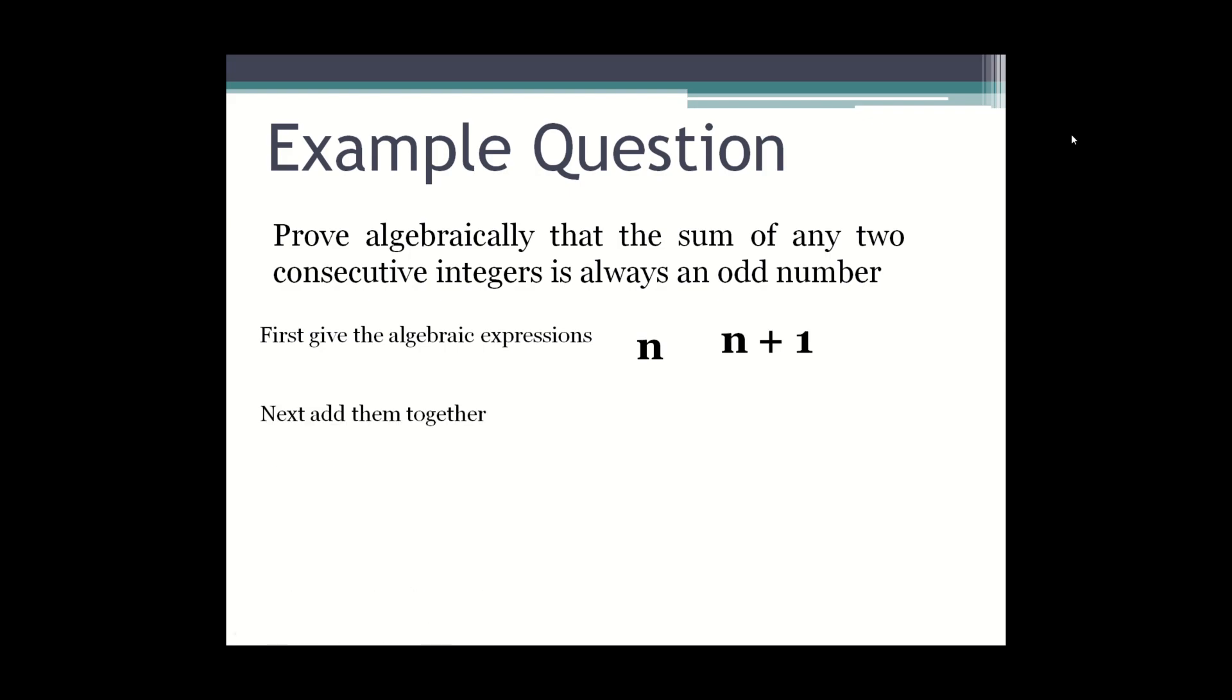And then you add them together because you're looking for the sum. So n plus n plus 1 is 2n plus 1.